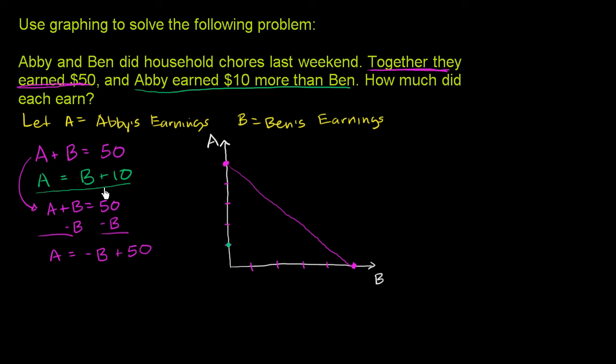Our slope is 1 here. If Ben makes $10, Abby makes $20. If Ben makes $20, Abby makes $30. We could keep going, but this gives us the general direction. It already hints at a point of intersection.